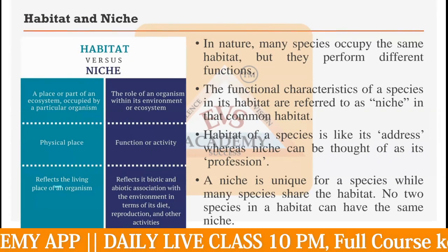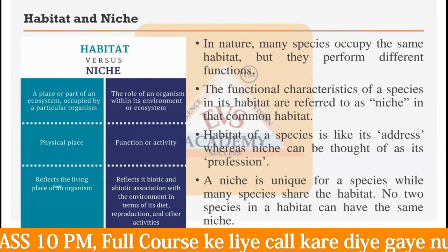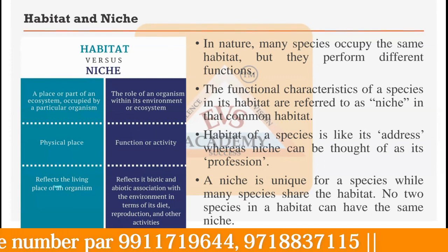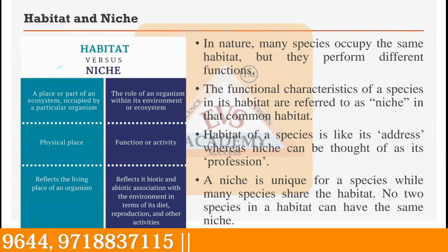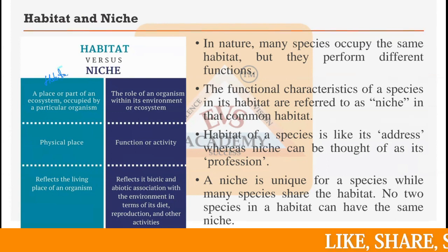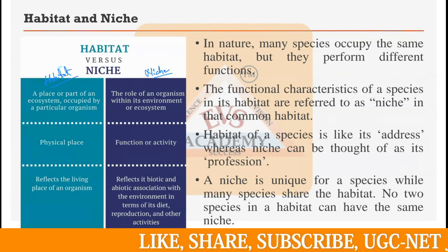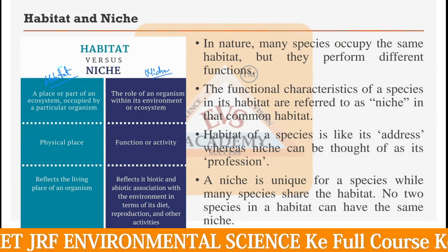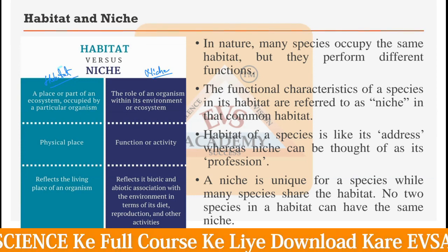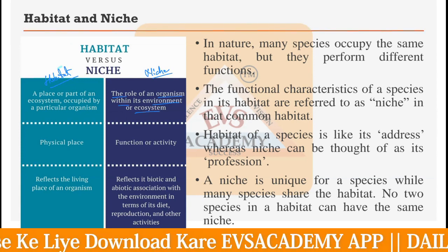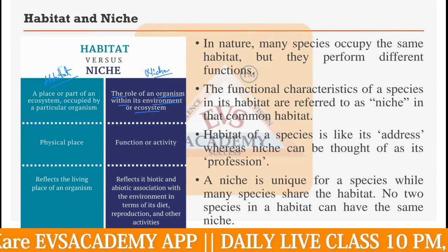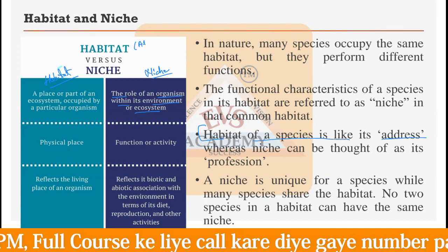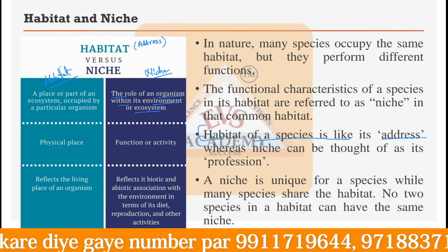There is another term called niche, which is different from habitat. Habitat is the physical place occupied by any particular organism — it is like the address of any organism. Niche, on the other hand, is the role or profession of that organism within its ecosystem — what that particular organism is doing in its environment.